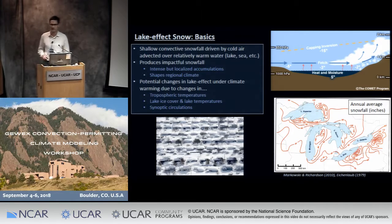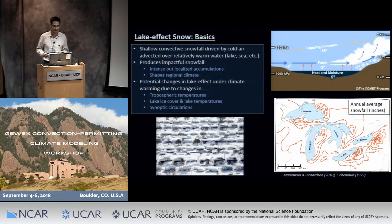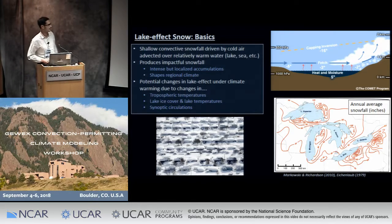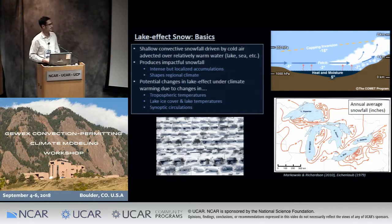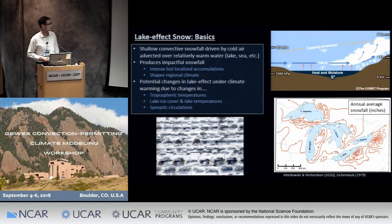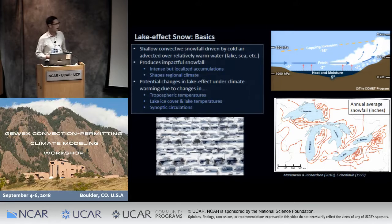First, some lake effect snow basics — and in a way we got a primer for this in the last talk. This is shallow convective snowfall driven by cold air being advected over relatively warm water, much as you just saw over the Sea of Japan. Here's a schematic: cold air coming out over a body of water that's warmer than the air drives low-level instability, so you get turbulence over the water transporting heat and moisture from the lake up into the atmosphere. That in turn drives convection, which can produce often shallow convection capped by an inversion but with very intense snowfall.